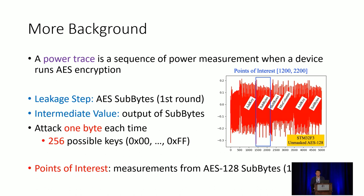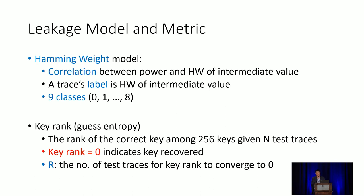We use the Hamming weight model, assuming there is a correlation between power consumption and the Hamming weight of the intermediate value of the encryption, which is the outputs of sub-bytes. From a machine learning perspective, the label for each trace is the Hamming weight of this intermediate result, giving us nine classes overall. For evaluation, we use key ranking or guessing entropy — the rank of the correct key among all 256 possible keys. If the key rank is zero, you have recovered the key correctly.